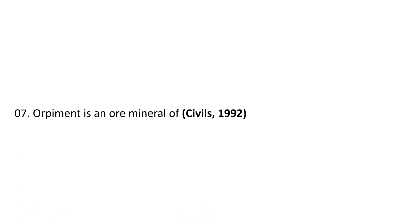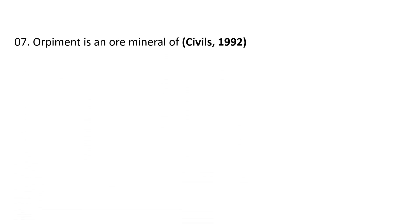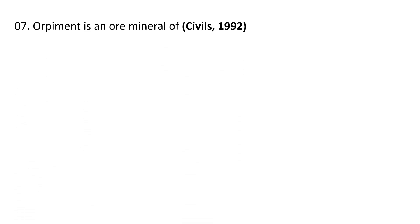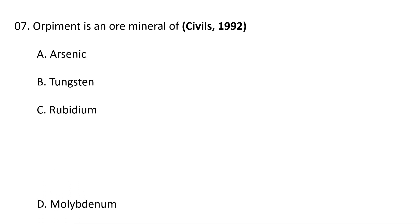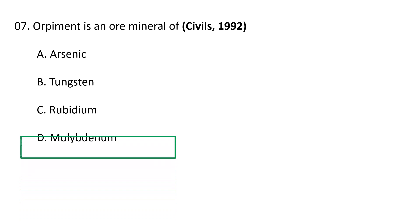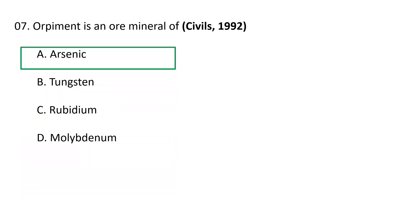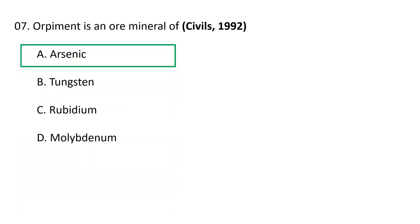Next question: Orpiment is an ore mineral of — also a very straightforward question. A. Arsenic, B. Tungsten, C. Rubidium, D. Molybdenum. Orpiment is an ore mineral of Arsenic; it is an arsenic sulfide.